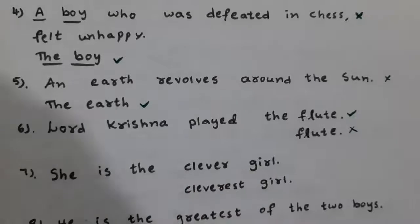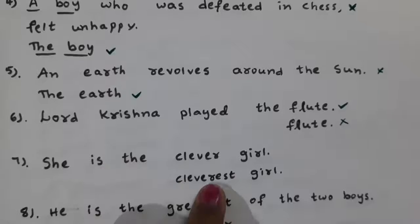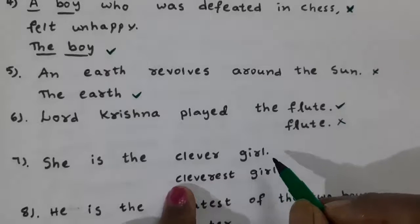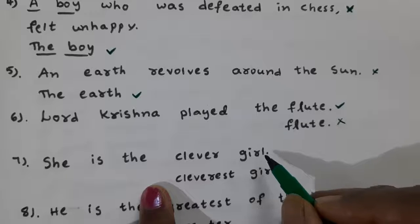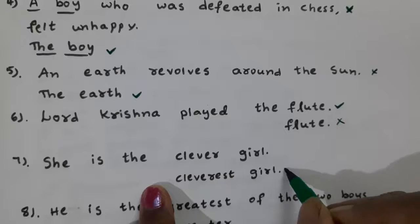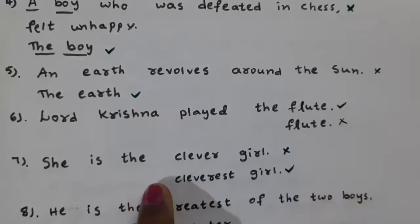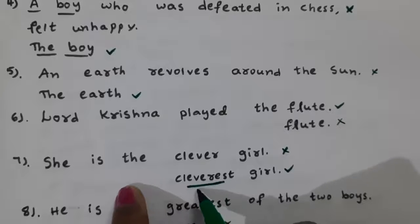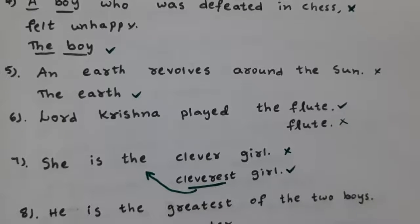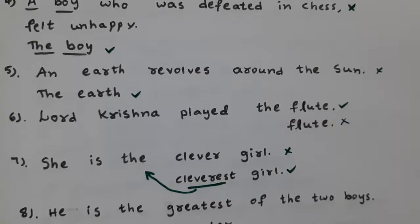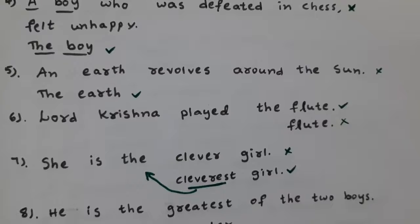Next: 'She is the clever girl' versus 'She is the cleverest girl.' Which is correct? 'She is the cleverest girl' is correct, because before superlative adjectives we use the definite article 'the'. The adjective forms are: clever, cleverer, cleverest — so before the third form, the superlative, we use 'the'. For example: the tallest, the smallest, the shortest.